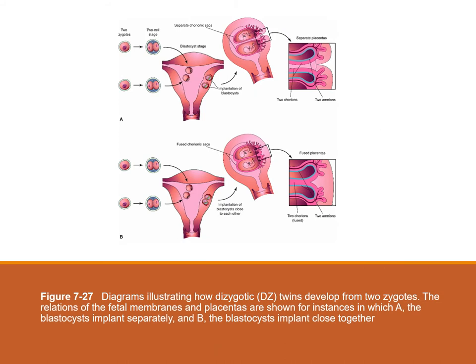Because dizygotic or fraternal twins result from the fertilization of two oocytes, the twins may have the same sex or they may be of different sexes. They are no more alike genetically than brothers or sisters born at different times — it just so happens they are born at a similar time. The only thing they have in common is that they were in their mother's uterus at the same time. Dizygotic twins would always have two amnions and two chorions, but the chorions and placenta may fuse if the zygotes implant very close to each other.